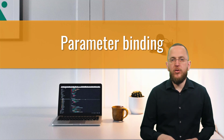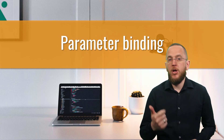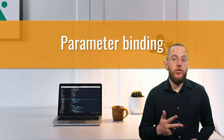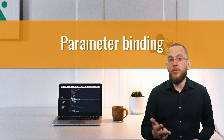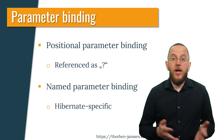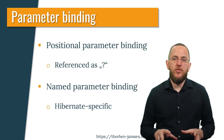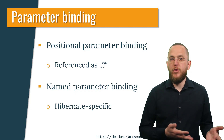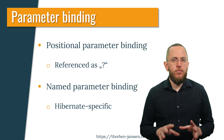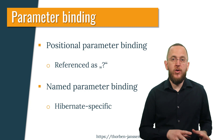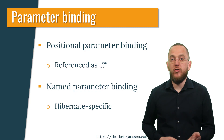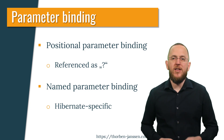Using parameter bindings provides several advantages: you do not need to worry about SQL injection, the persistence provider maps your query parameters to the correct types, and the persistence provider can do internal optimizations to improve performance. JPQL and native SQL queries use the same query interface, which provides a setParameter method for positional and named parameter bindings. But the support of named parameter bindings for native queries is a Hibernate-specific feature.